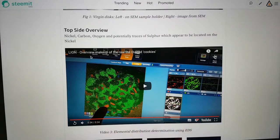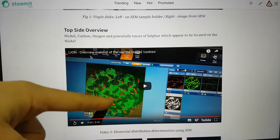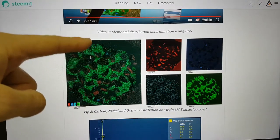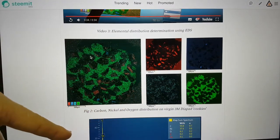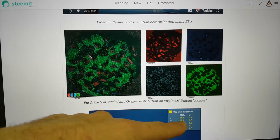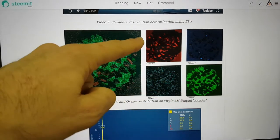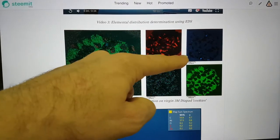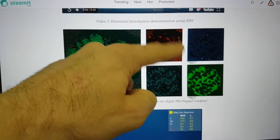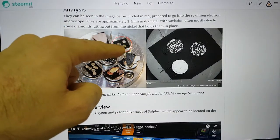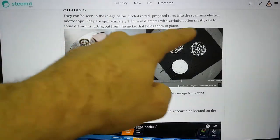Looking at the top side there's an overview video here. Here is the element distributions and essentially by weight it is carbon, nickel and oxygen. There's an over-representation of carbon here because it's looking at the carbon in the SEM carbon tape that adheres the sample to the background.